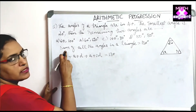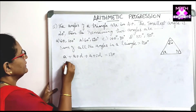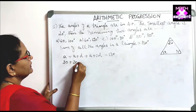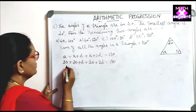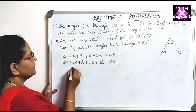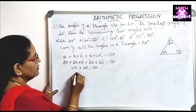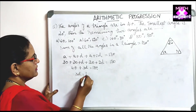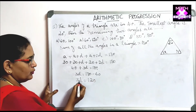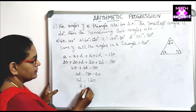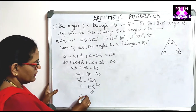Setting up the equation: A plus (A plus D) plus (A plus 2D) equals 180. With A equal to 20: 20 plus 20 plus D plus 20 plus 2D equals 180, so 60 plus 3D equals 180. Therefore 3D equals 120, giving D equals 40.